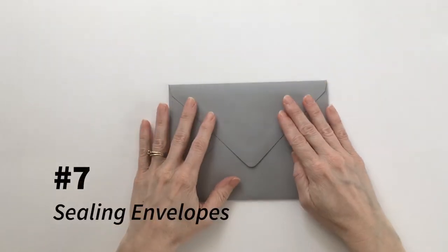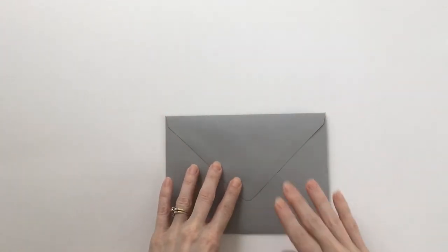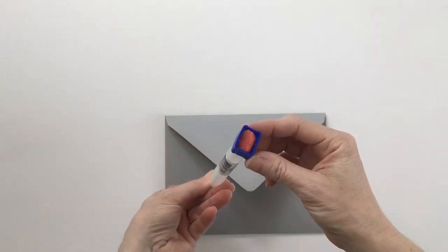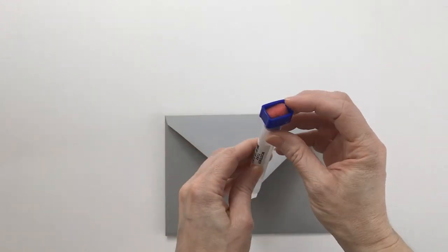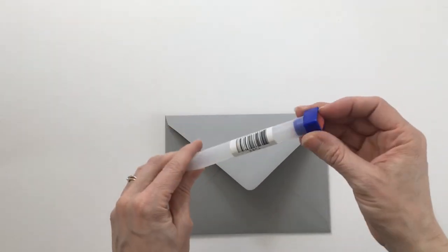When sealing envelopes, lick the gum line with your tongue and press firmly to seal. I would not recommend using these little sponge roller things because I've tried them several times before and they're always too wet. It always wrinkles the edge because it's too wet.